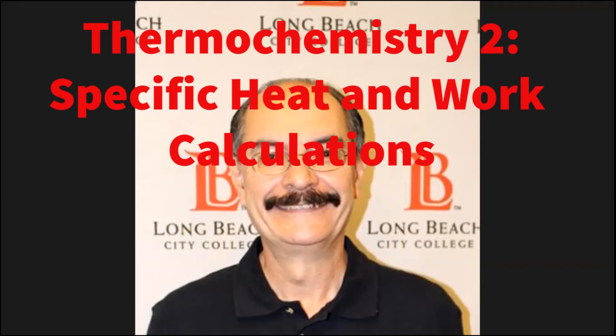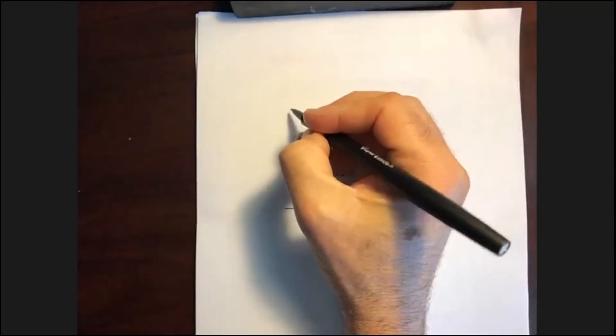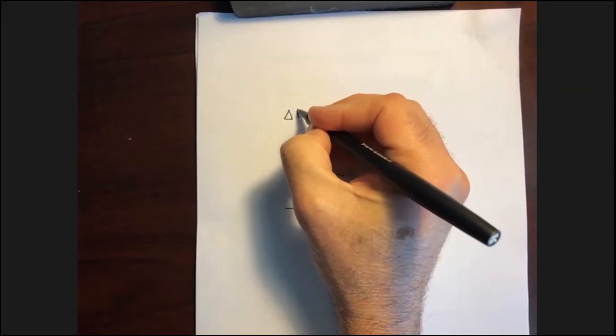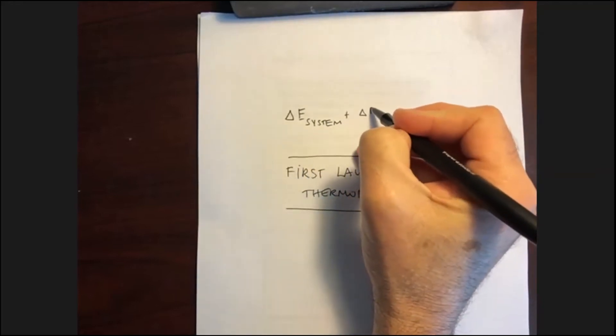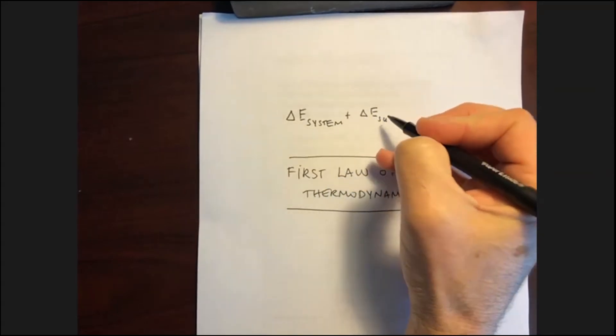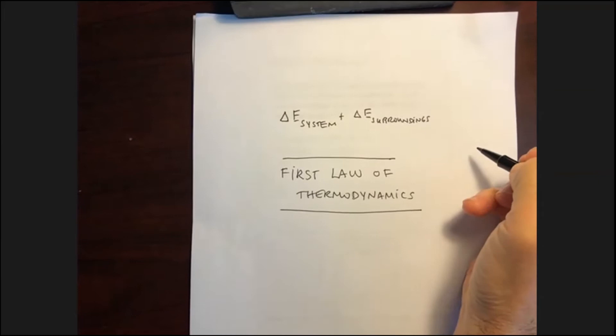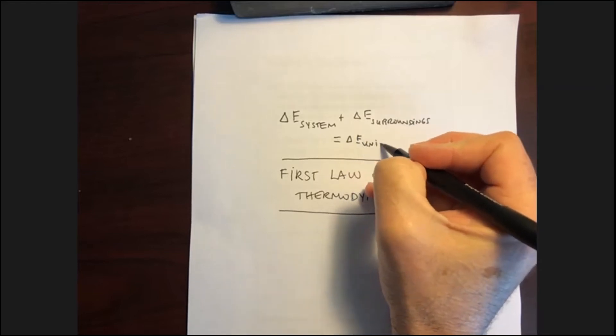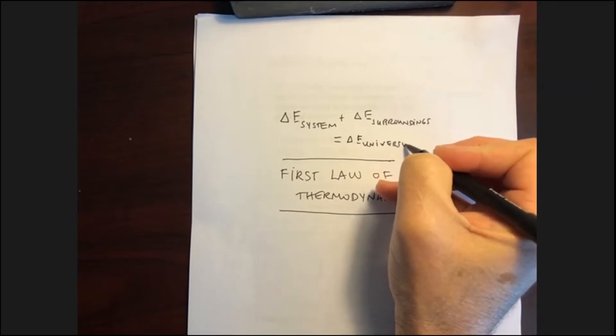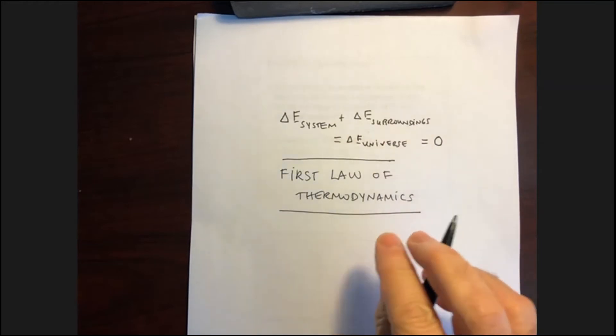Just to review, remember that in our previous talk, we talked about the first law of thermodynamics, and there are two ways of expressing this law. One of them is that whenever there is any kind of process, whatever change in energy happens in our system, and whatever change in energy happens in the surroundings, will compensate each other, because the total energy of the universe never changes. In other words, energy is always conserved. It cannot be created, and it cannot be destroyed.